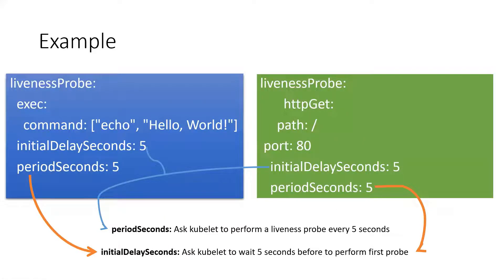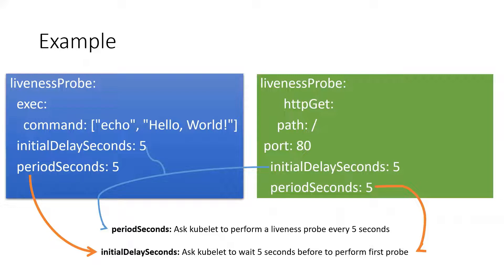The liveness probe looks like two things by default. There are two options available: one is the exit code command and another is HTTP GET. With the exit code command, we can give a command — for example, echo hello world — and it checks whether a response is coming. With HTTP, it checks the response code for a given path and port. Make sure your application port is given correctly. In this example, we are checking the root endpoint on port 80.